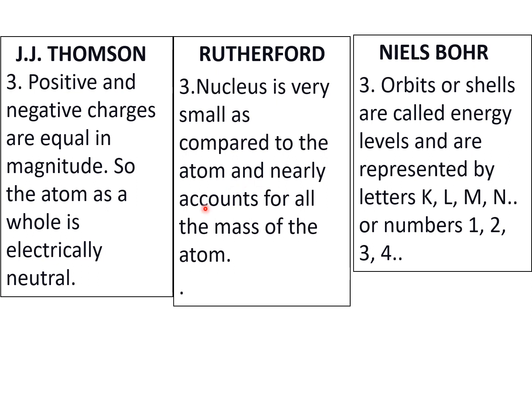Then Niels Bohr said that orbits or shells are called energy levels and are represented by letters K, L, M, N or numbers 1, 2, 3, 4. So these three points, three models systematically in tabular form arranged. Copy down, revise, revise, then practice.